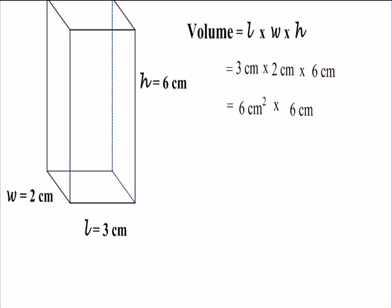When we multiply 3 by 2, we get 6 centimeters squared. So, 3 centimeters multiplied by 2 centimeters will give us 6 centimeters squared. We then multiply that 6 centimeters squared by 6 centimeters of the height. That gives us 36 centimeters cubed.